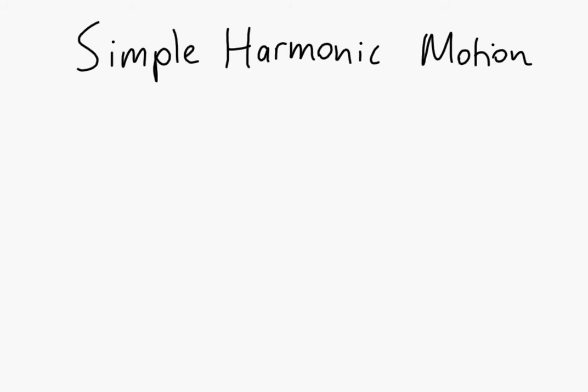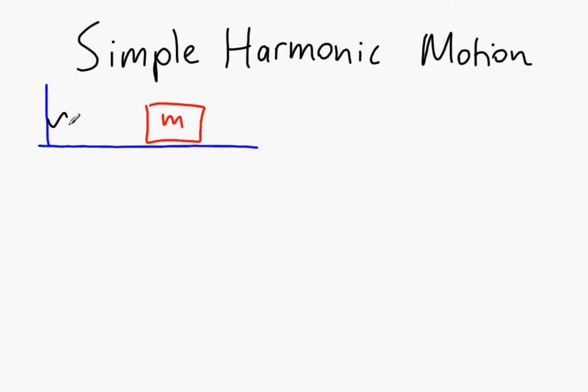Let's start by considering something that does simple harmonic motion. If we start off with a mass attached to a spring, and we say that the mass is on a totally frictionless surface, this is the equilibrium position of the mass. If you pull it to the side and let go, it will oscillate from left to right.